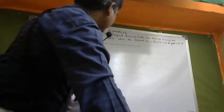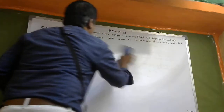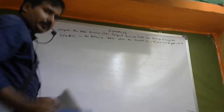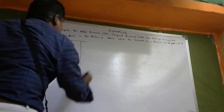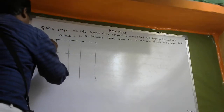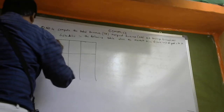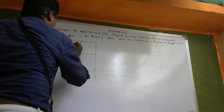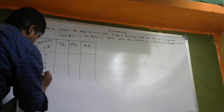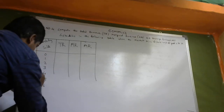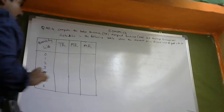See here — in the question, the table is already given. So, one side has: first column is Quantity Sold, next TR, then MR, then AR. Quantity is: zero, one, two, three, four, five, and six.